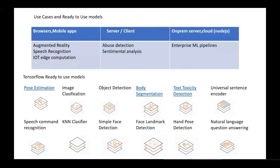What pre-built TensorFlow models are available? TensorFlow provides ready-to-use models. First is pose estimation, which detects 19 parts of the body and identifies your standing or sleeping position. At Enquiro, we've built a use case using this. Image classification is another pre-built model available in TensorFlow's GitHub repository.